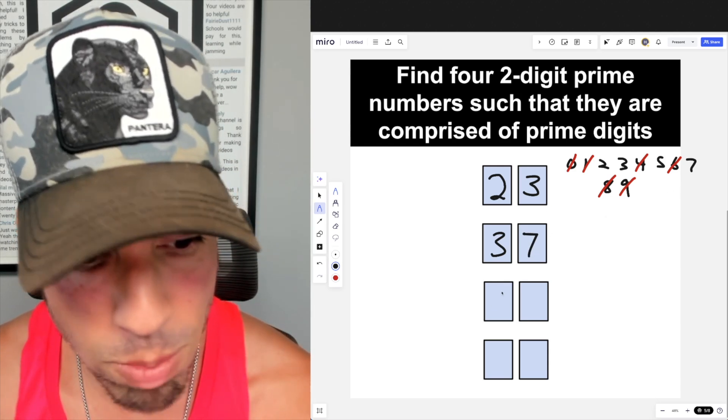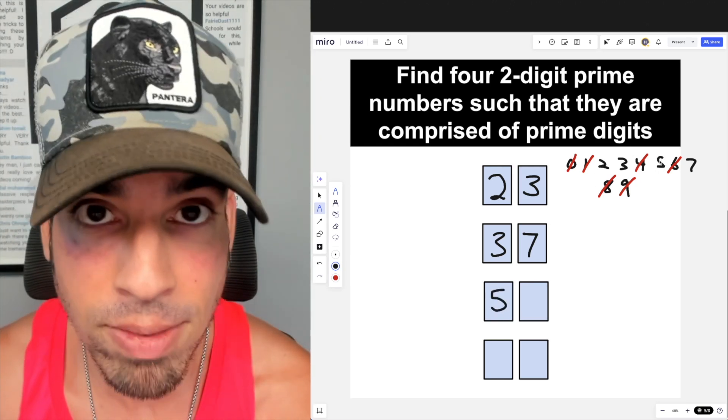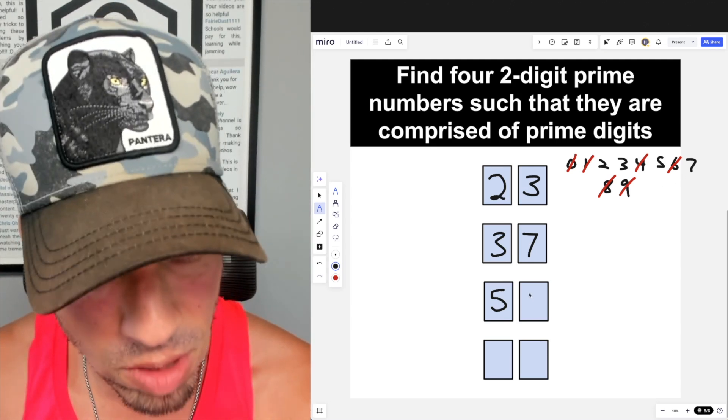Now let's move to five in the fifties. We cannot do 52, we cannot do 55 because that's divisible by five, we can't do 57 because that's divisible by three and 19, but 53 does work.